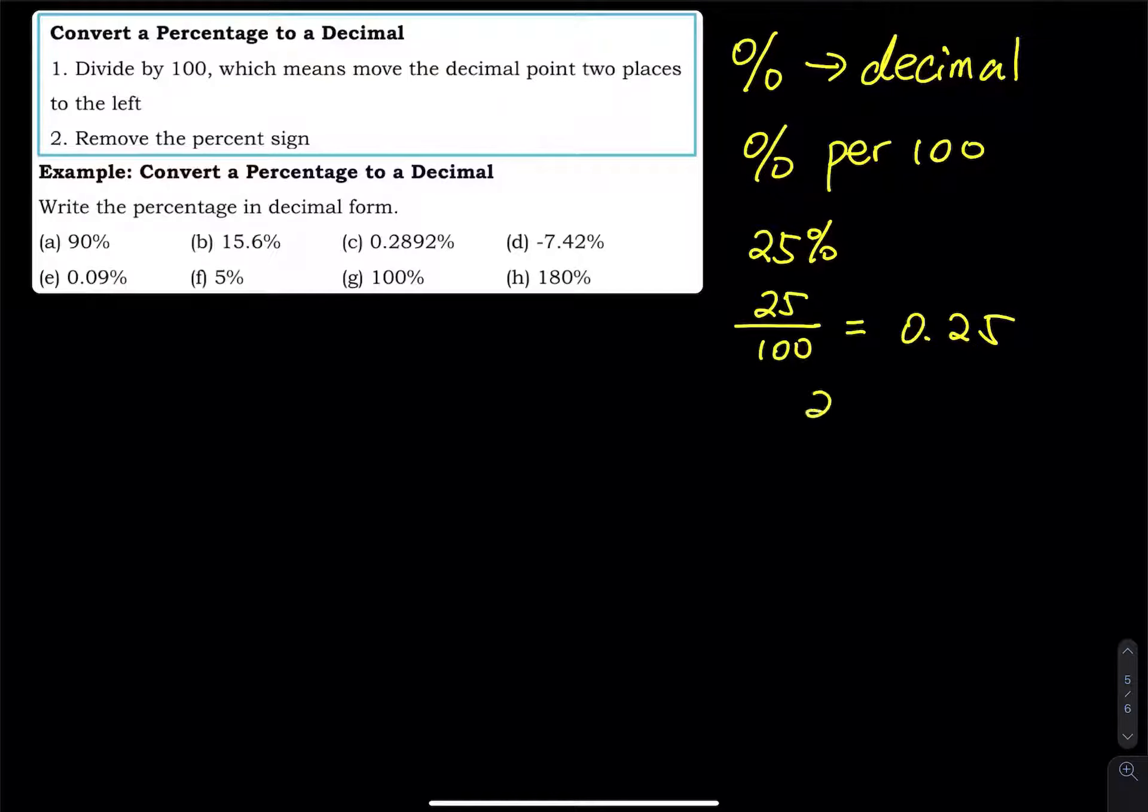And another way to do it is 25, right? 25, the decimal point is right here. You move the decimal point two steps to the left, so you have 0.25.